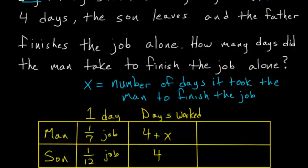So this last column can be the portion of the job that each of them finish. So for the man, in one day, he finishes one-seventh of a job, and he works four plus x days.